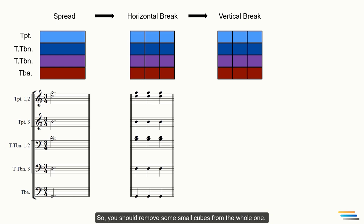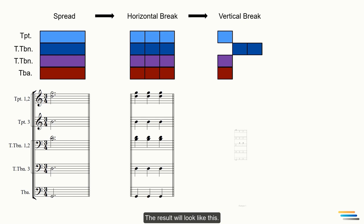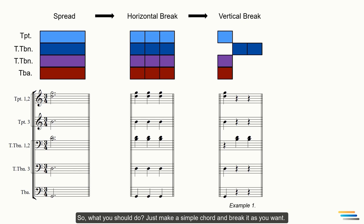The next step is to break the chord in a vertical direction. So, you should remove some small cubes from the whole one. For instance, let me delete the second and the third cubes of the trumpets and the first cube of the first and the second trombones. Finally, let me delete the second and the third cubes of the third trombone and tuba. The result will look like this. So, what you should do? Just make a simple chord and break it as you want. Then, change any pitches or beats. This method will help you to make more complex accompaniments in your textures. If you are not satisfied with the result, just change the cubes or break the chord again and again.